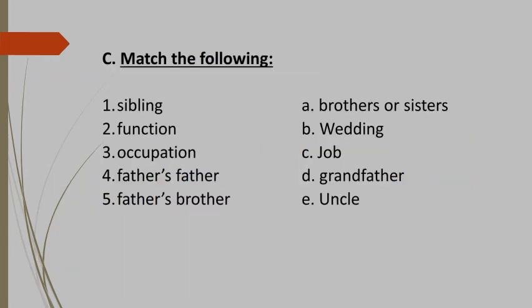Now let us see Question C: Match the following. Number one: Sibling — the answer is brothers or sisters. Number two: Function — here it means wedding. Number three: Occupation — the answer is job. Number four: Father's father — that is grandfather. Number five: Father's brother — the answer is uncle.